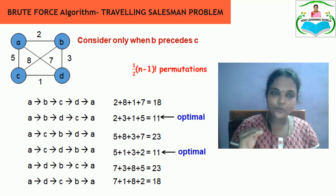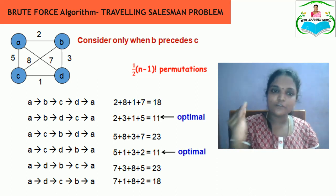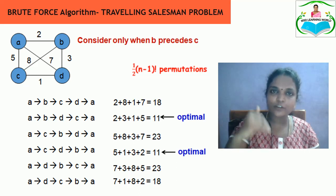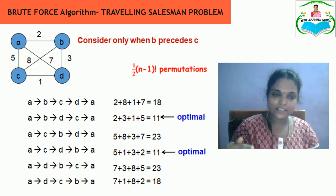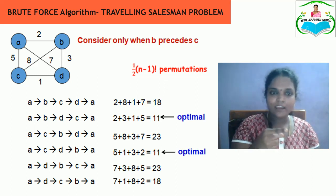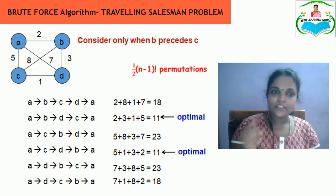According to brute force, we need to find all possible available routes from source A back to A itself — the person starts from A and has to return to A with the minimum possible distance. The available paths are: A→B→C→D→A with distance 2+8+1+7 = 18.